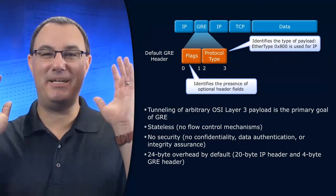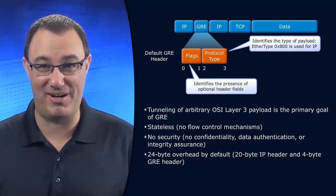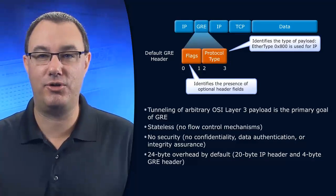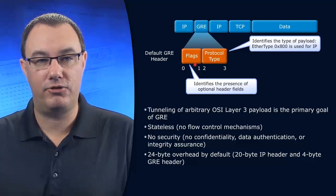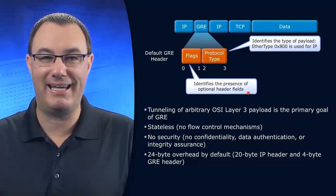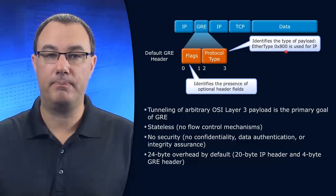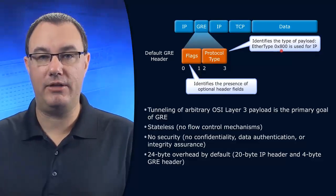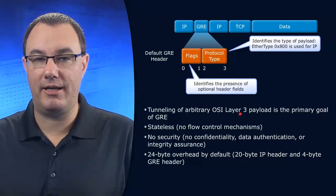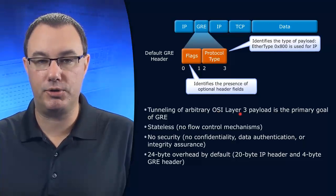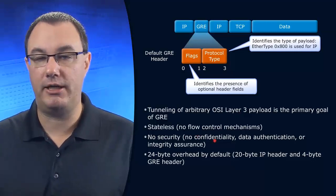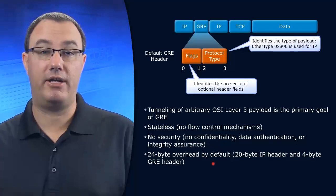Generic routing encapsulation is just trying to be open. It says: I don't care what I'm carrying across — just give me some packets, I'll wrap it up and shoot it across to the other side. We can see things like inside the flags field, optional header fields. What protocol are we using? When we're talking to IPv4, we're going to see Ethertype hexadecimal 800. It's a very open, arbitrary container. It's stateless, doesn't keep track of what we sent. No security, and you can also see how big the header is.